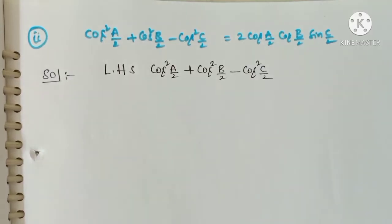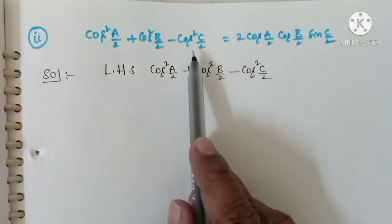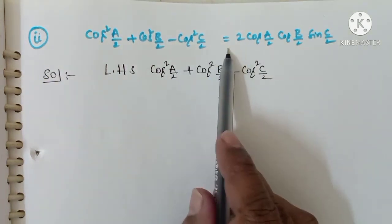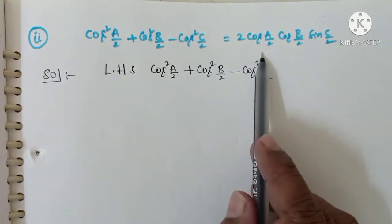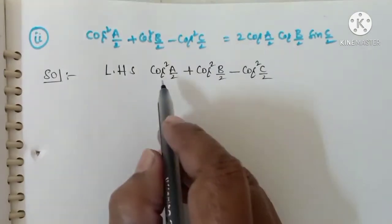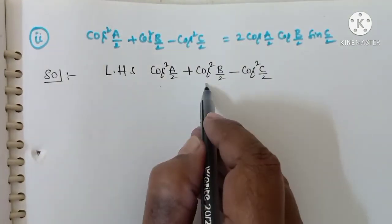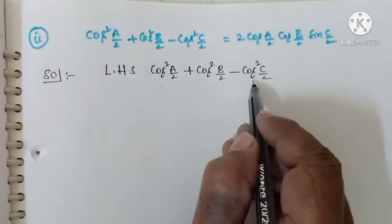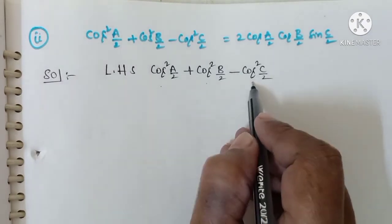Now we shall see the second bit of the fourth question: cos squared a by 2 plus cos squared b by 2 minus cos squared c by 2 is equal to 2 cos(a by 2) cos(b by 2) sin(c by 2). First we take the LHS: cos squared a by 2 plus cos squared b by 2 minus cos squared c by 2.